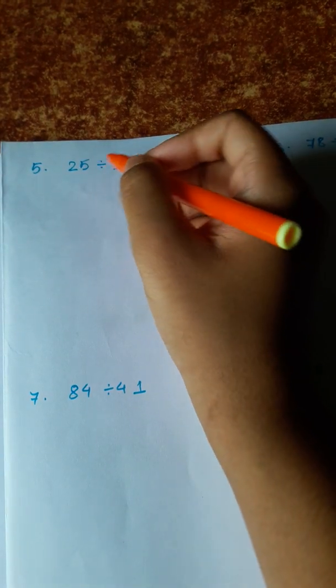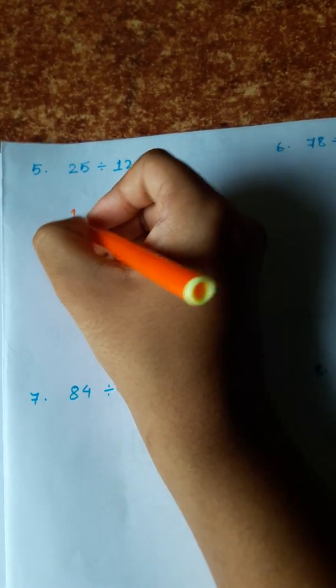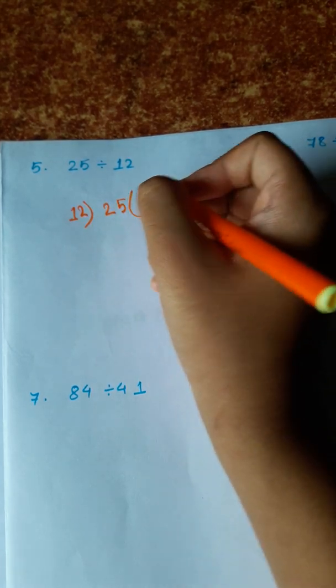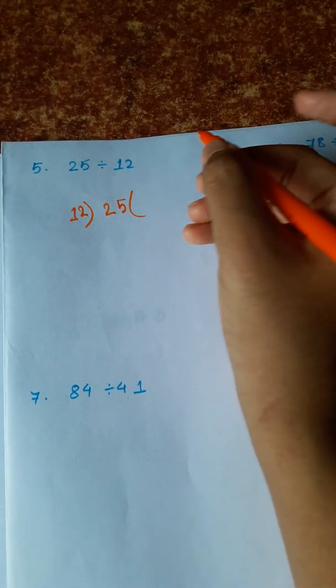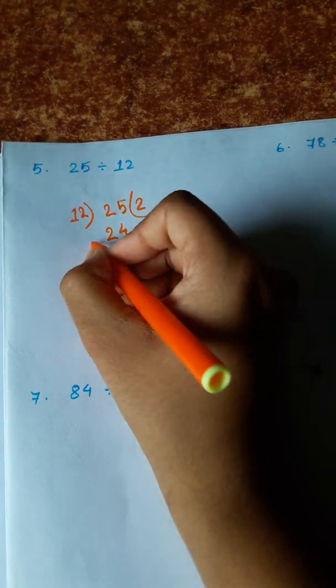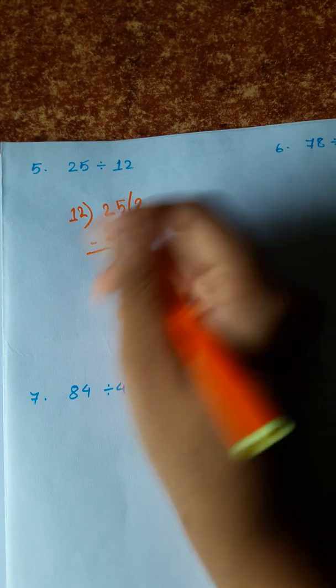Next problem, 26 divided by 12. 12 ones are 12, 12 twos are 24, 12 threes are 36. 12 twos are 24, remaining 2.